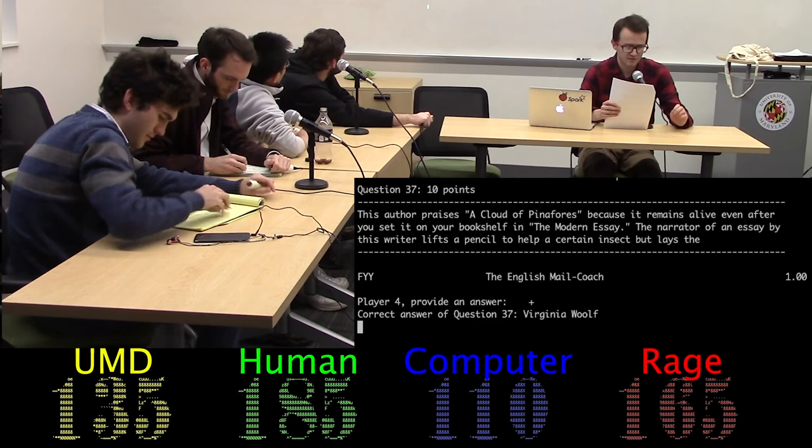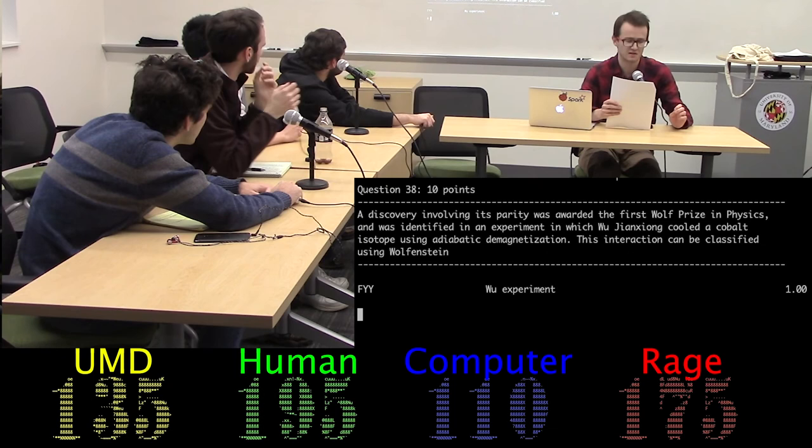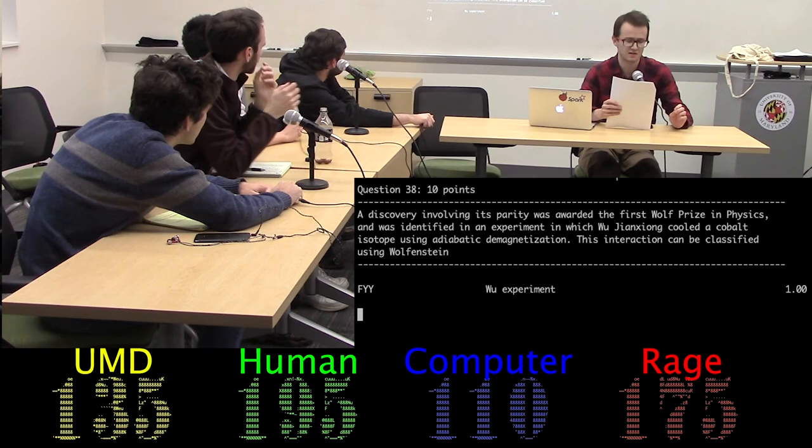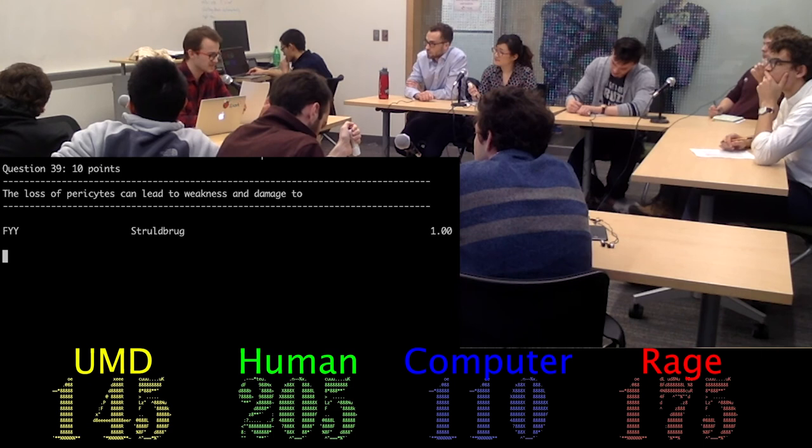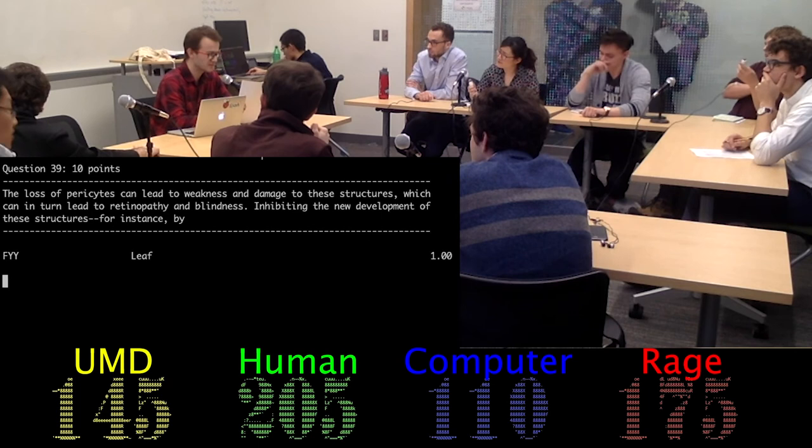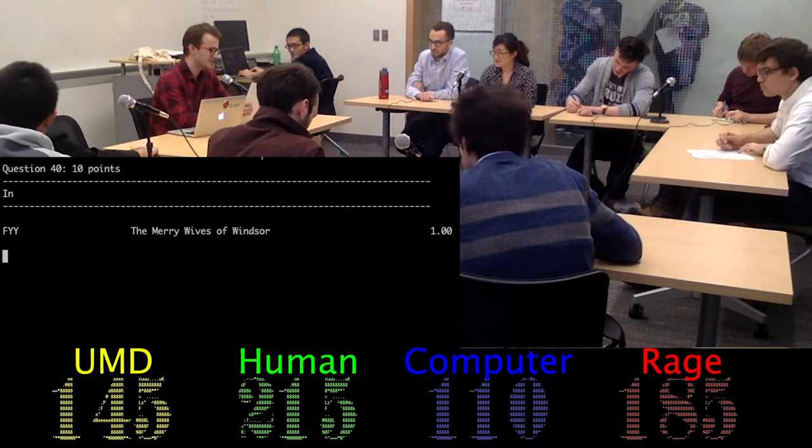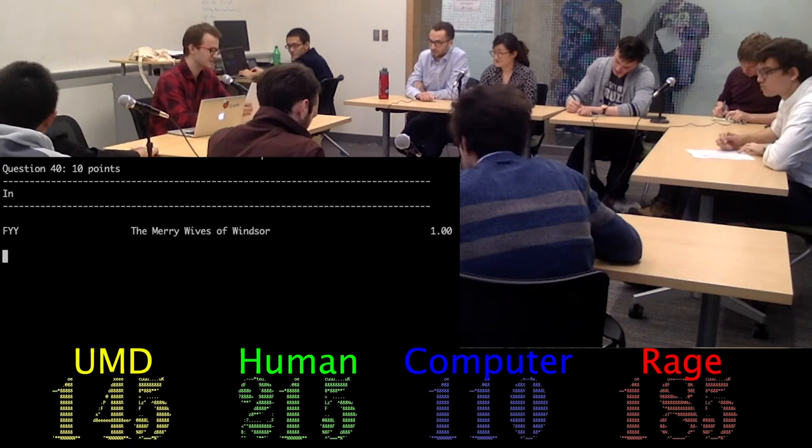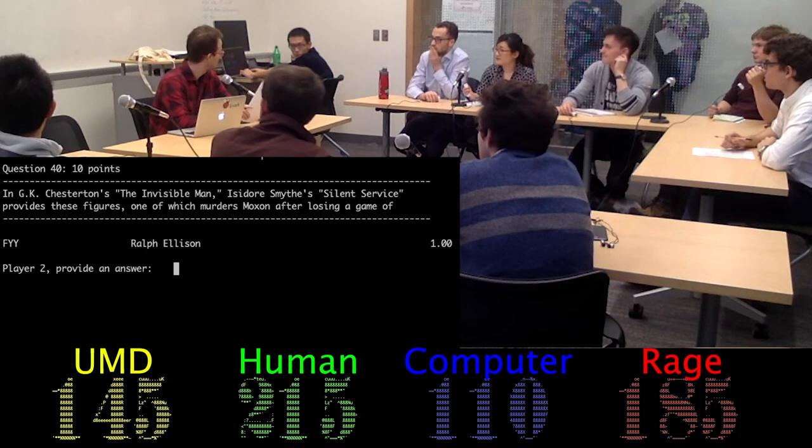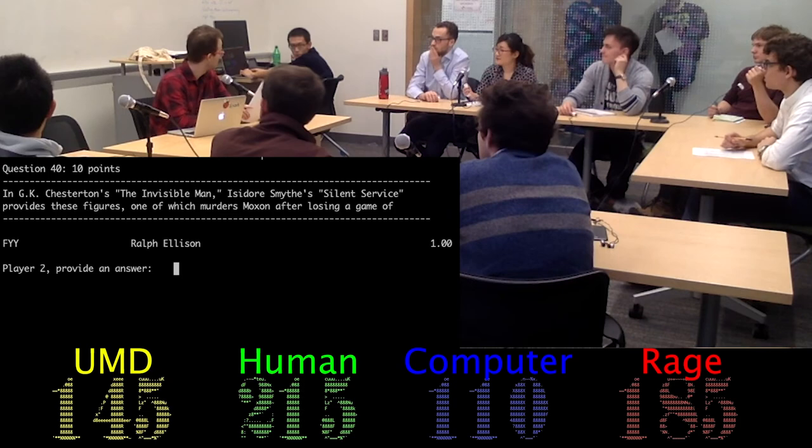Toss-up 38. A discovery involving its parity was awarded the first Wolf Prize in Physics and was identified in an experiment in which Wu Jianxiang cooled a cobalt isotope using adiabatic demagnetization. This interaction can be classified using... The weak force. Yes. 10 points. Toss-up 39. The loss of parasites can lead to weakness and damage to these structures, which can in turn lead to retinopathy and blindness. Inhibiting the new development of these structures, for instance by targeting VEGF, is central to a class of cancer-fighting drugs... Blood vessels? Yes. 10 points. And toss-up the last. In G.K. Chesterton's The Invisible Man, Isidore Smith's silent service provides these figures, one of which murders Moxon after losing a game of chess in... Robot. And that's the man.